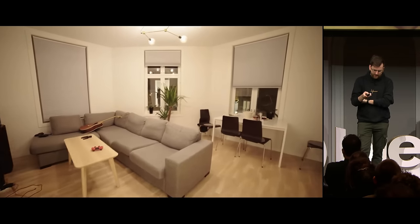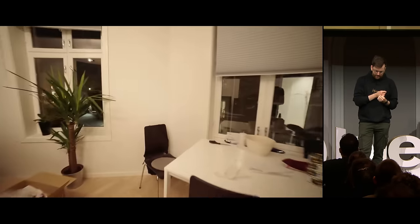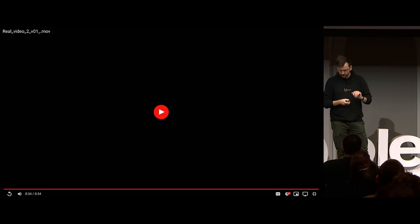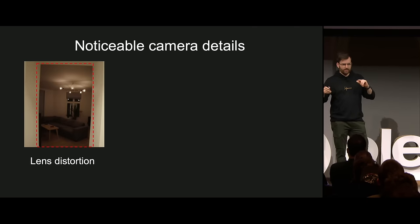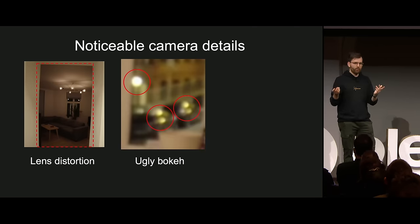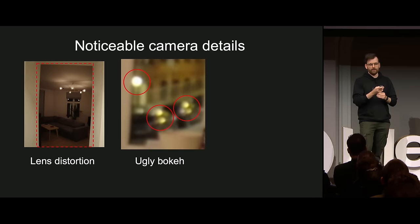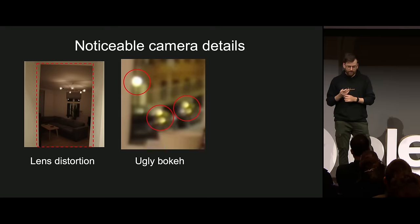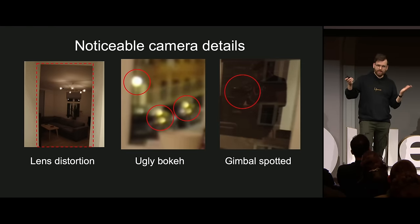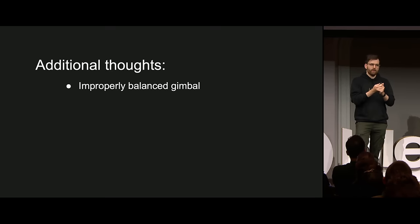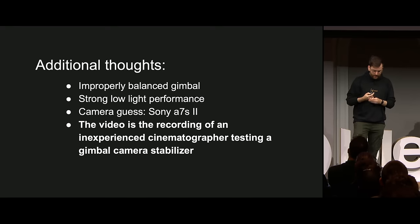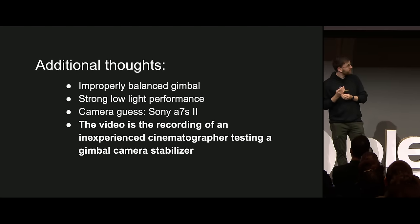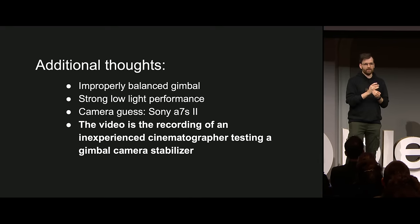And the bokeh in the distance is also a little bit uneven. We can actually see the camera operator in the reflection there. So if we look at what we got: severe lens distortion tells us this is a cheap lens, and ugly asymmetrical bokeh - not round as you'd expect in more premium cine lenses. We also got a gimbal, and we can assume it's improperly balanced. It is a camera with strong low light performance, probably the A7S Mark II. This video is a recording of an inexperienced cinematographer testing a gimbal camera stabilizer.